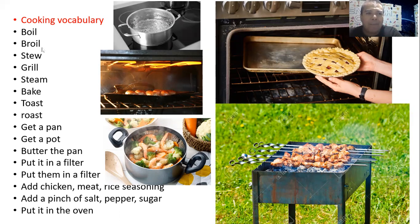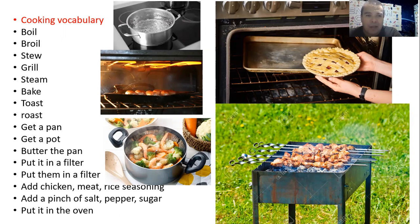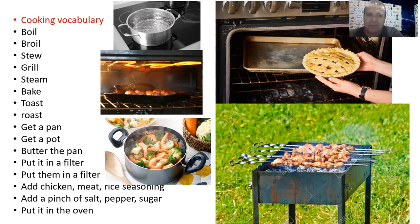Next one, we have broil. Broil is referring to this picture right here — you can see the heating pipes that are inside an oven. So that is basically broiling something, where it gets a little bit toasted and golden under and over the food. That is broil.